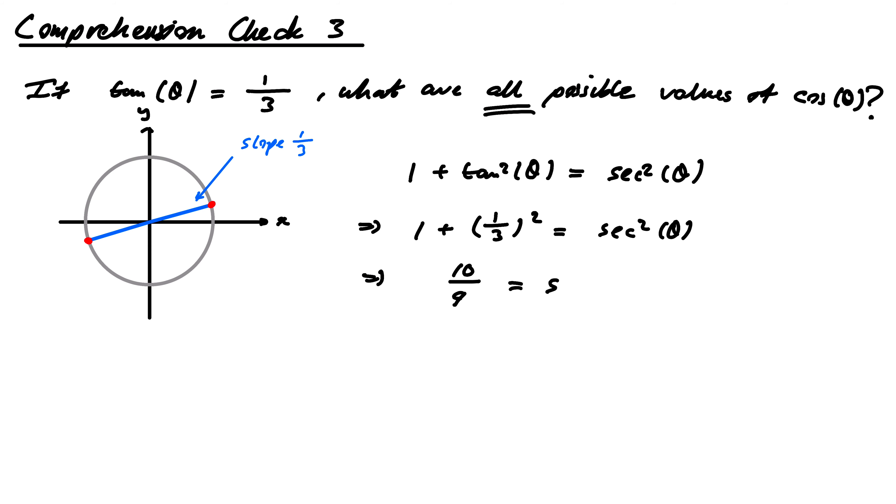Maybe. Cos squared of theta is equal to sec squared of theta. Now, this, remember, is equal to 1 divided by cos squared. So we could take the reciprocal of everything. This would give me cos²θ = 9/10.